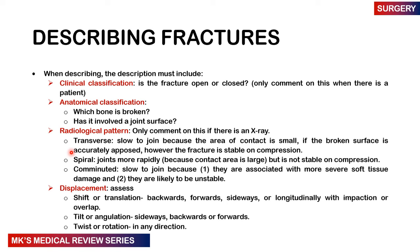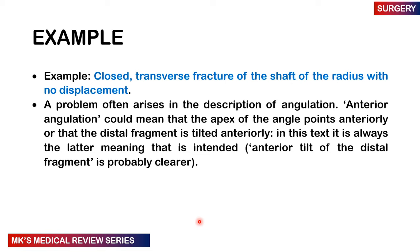Transverse fractures are slow to join because the area of contact is quite small; if accurately opposed, the fracture is stable on compression. Spiral fractures heal more rapidly but are not as stable. Comminuted fractures are very slow to heal because there is more than one fracture segment, and there's often significant soft tissue damage making them unstable. You also comment on displacement — shift, angulation, or rotation. For example, you would describe: 'a closed transverse fracture of the shaft of the radius with no displacement.'